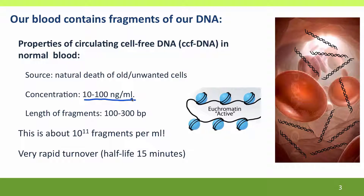The concentration of this DNA in healthy people is between 10 and 100 nanograms per mil. A nanogram is a billionth of a gram, which is already a pretty small piece, so that sounds like hardly anything. But when you consider the size of DNA, there are about 10 to the 11th — that's 100 billion fragments of DNA — in every mil of our blood. That's a ton of DNA.